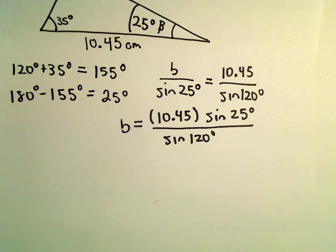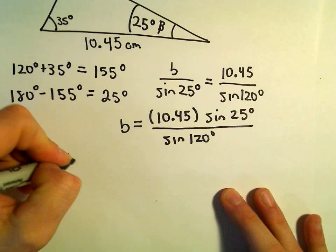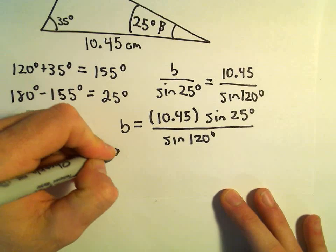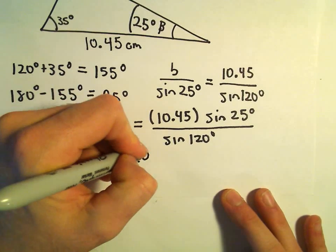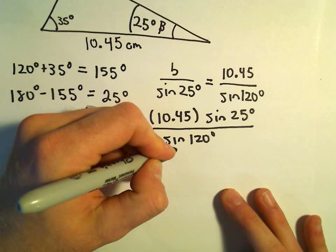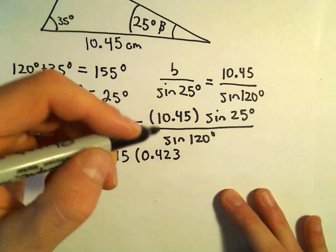So let's see, sine of 25 degrees, I'm getting sine of 25 degrees to be 0.423 after rounding.